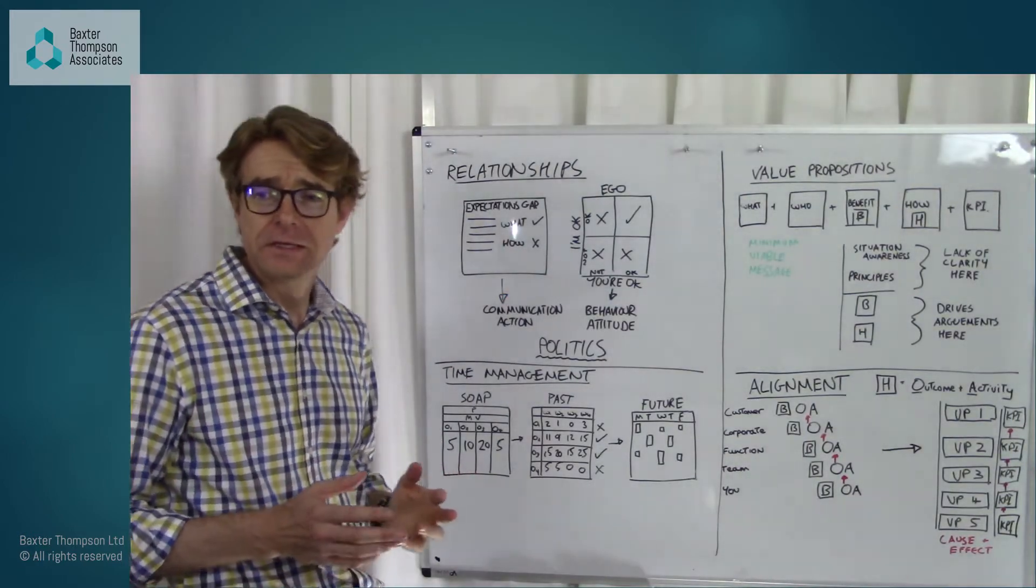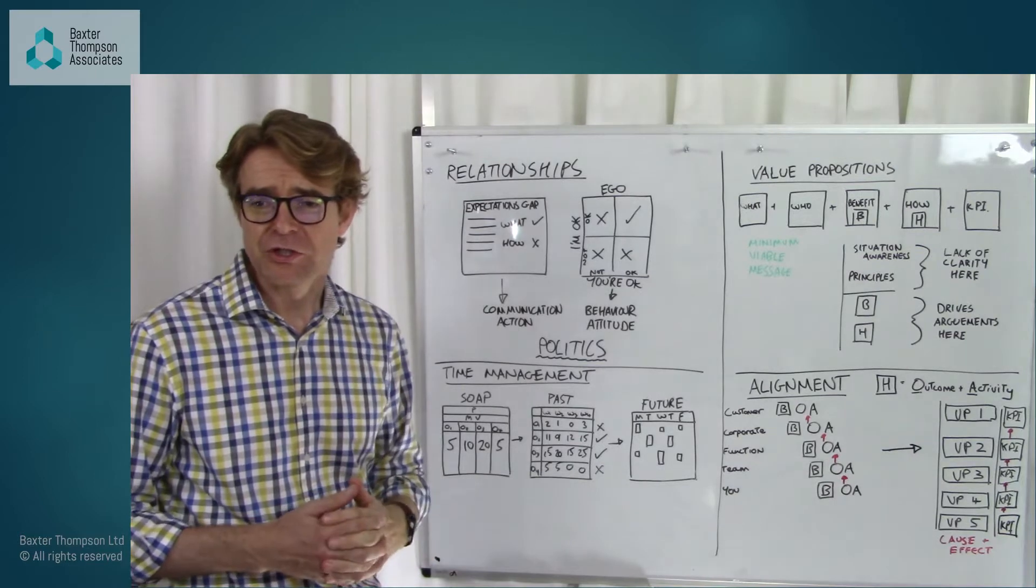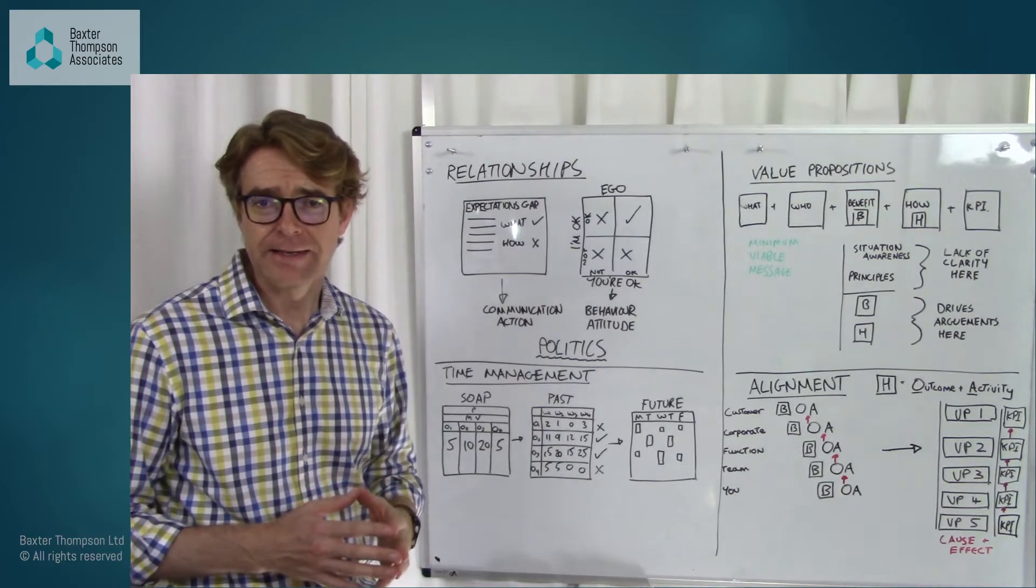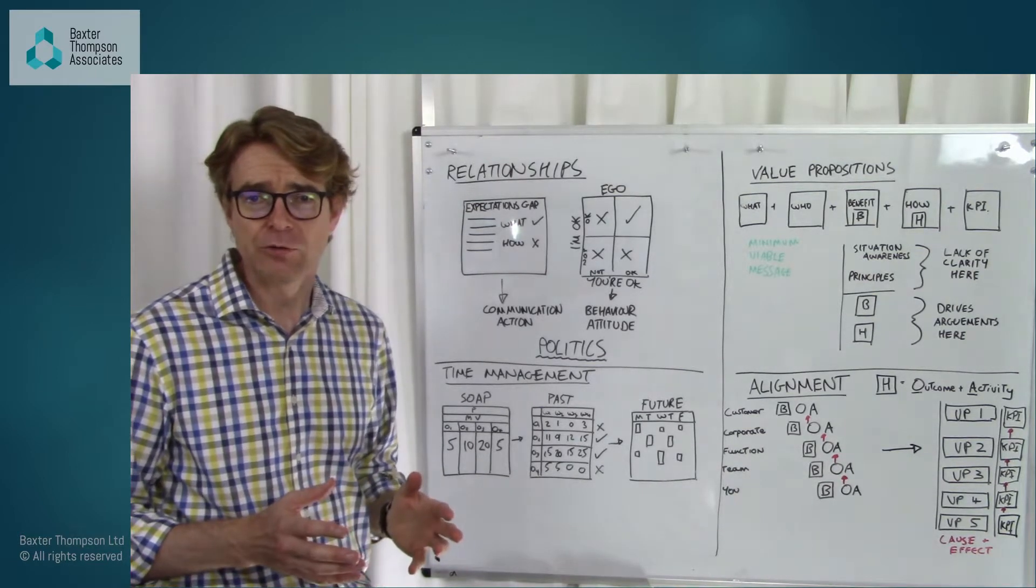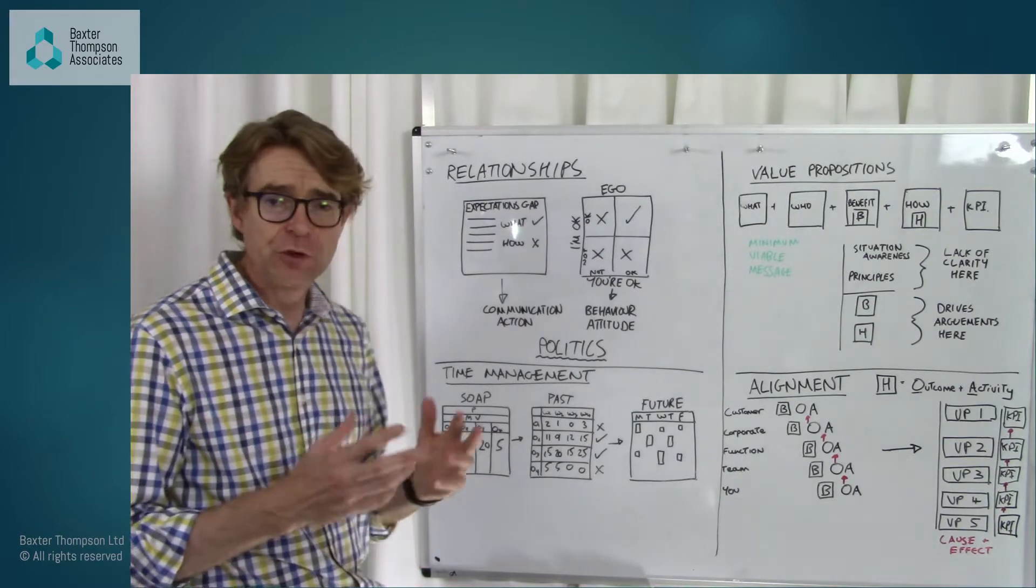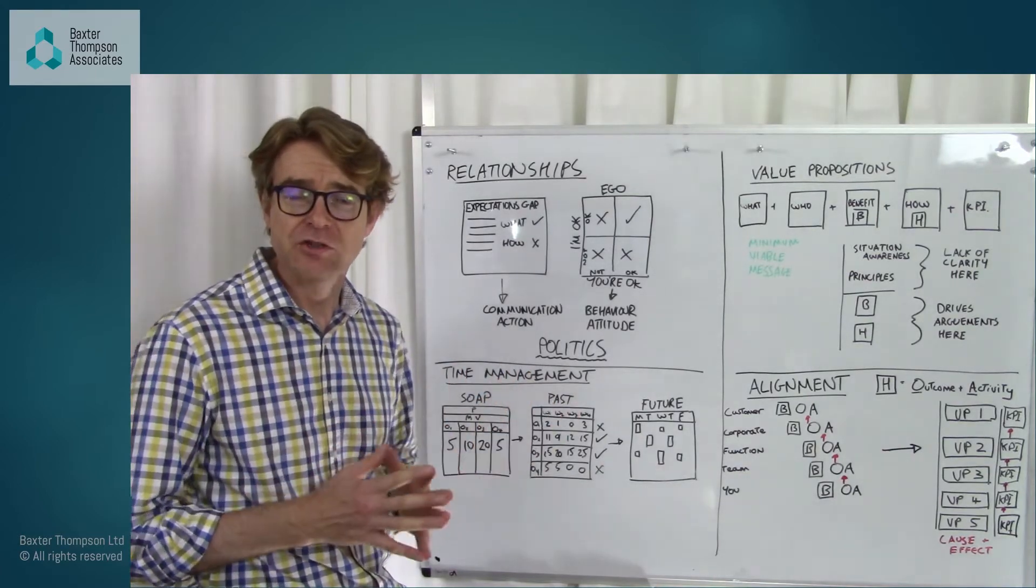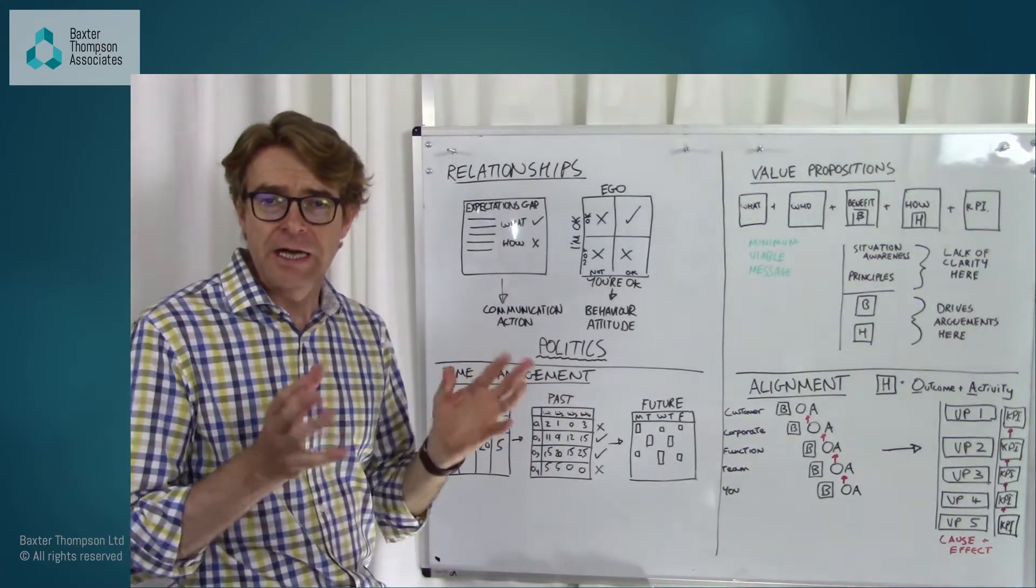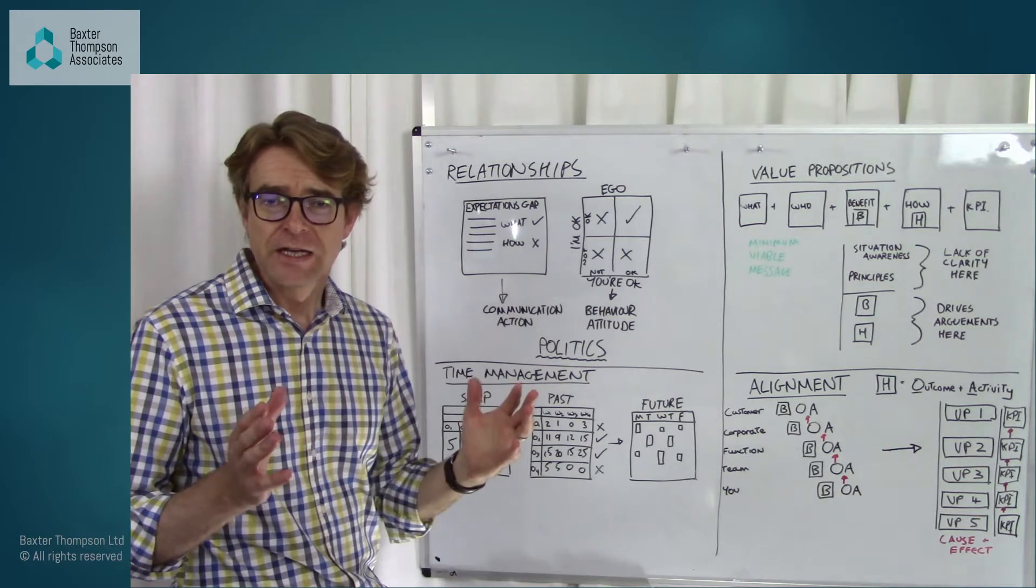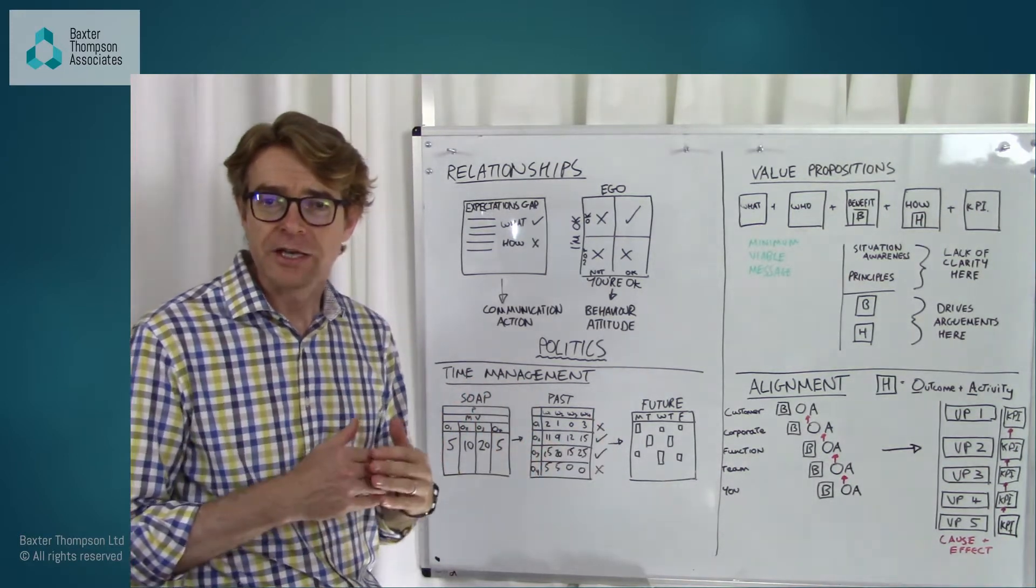In my first episode we were talking about how to establish good politics and gain alignment. This fundamentally boils down to managing relationships. I introduced a couple of tools, one which is proprietary and it talks about the expectations gap. The idea is that if we close the gap in expectations between two people then you're going to get more alignment.